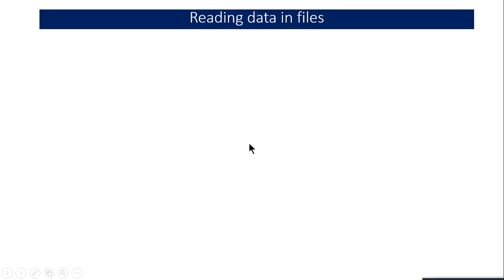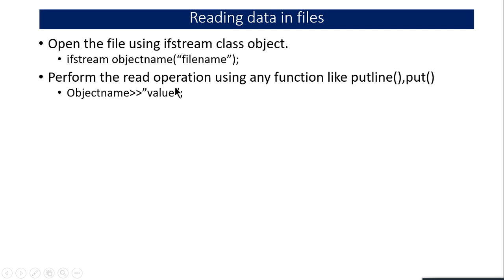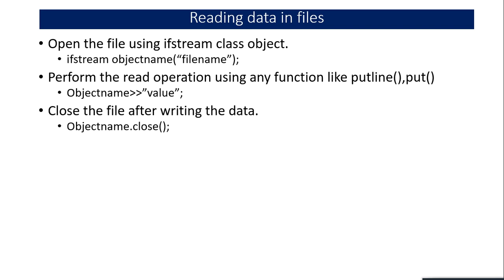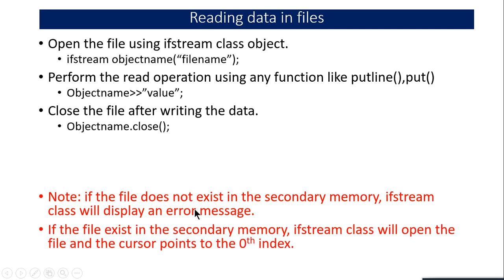Now let's start with reading data from files. Once I have stored data in the record file, I can read it using ifstream. First create the object, then read values from the file using the extraction operator — similar to cin — or using functions like getline and get. Once you read the file you must close it. If you open a file that does not exist, ifstream will display an error message. If the file exists, the ifstream class opens the file and the cursor points to the first location to read data one by one.